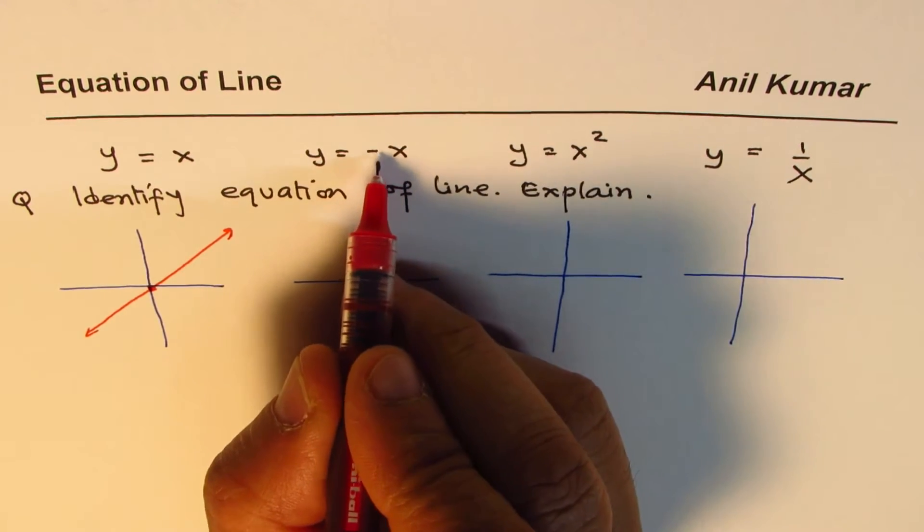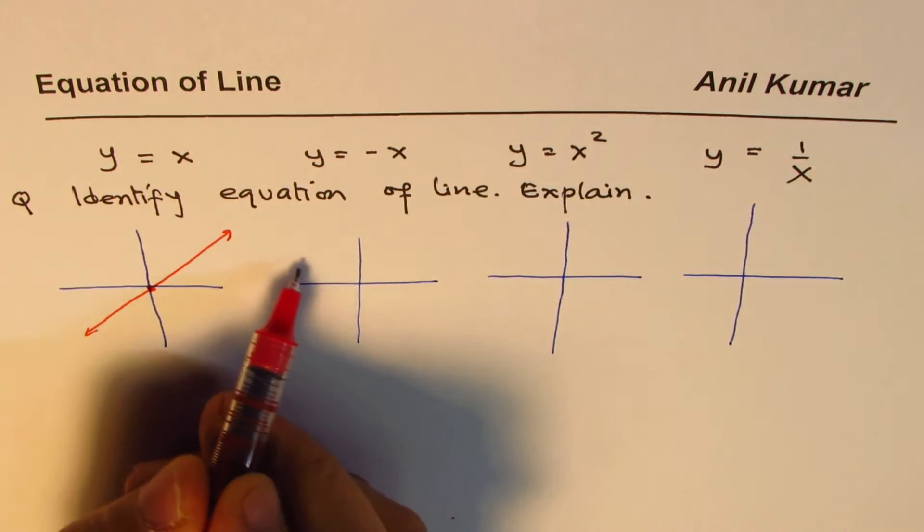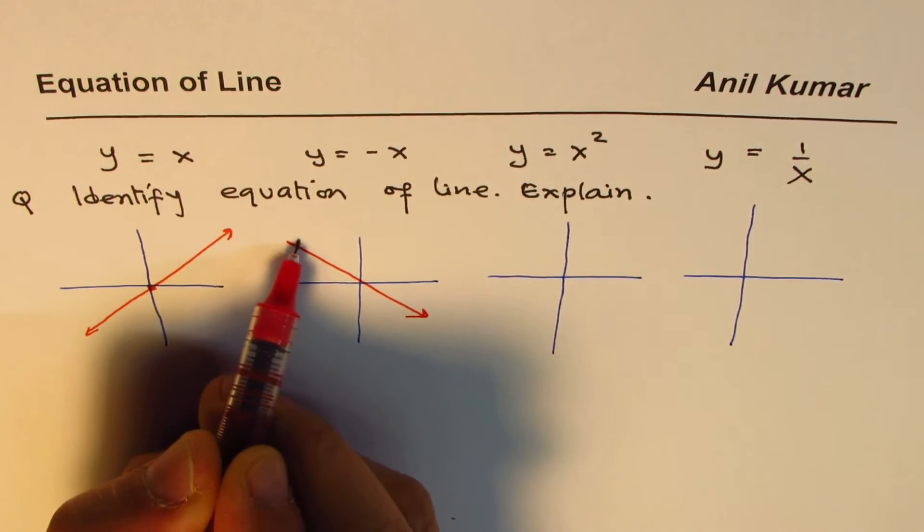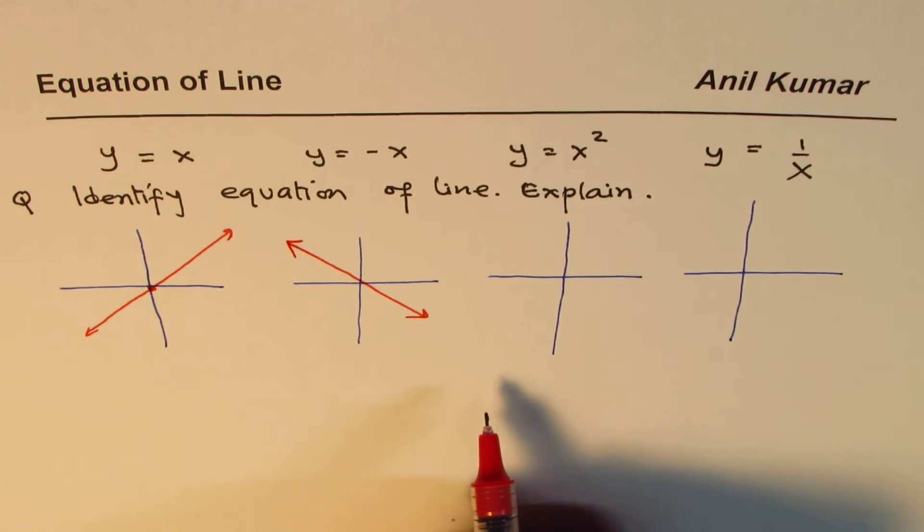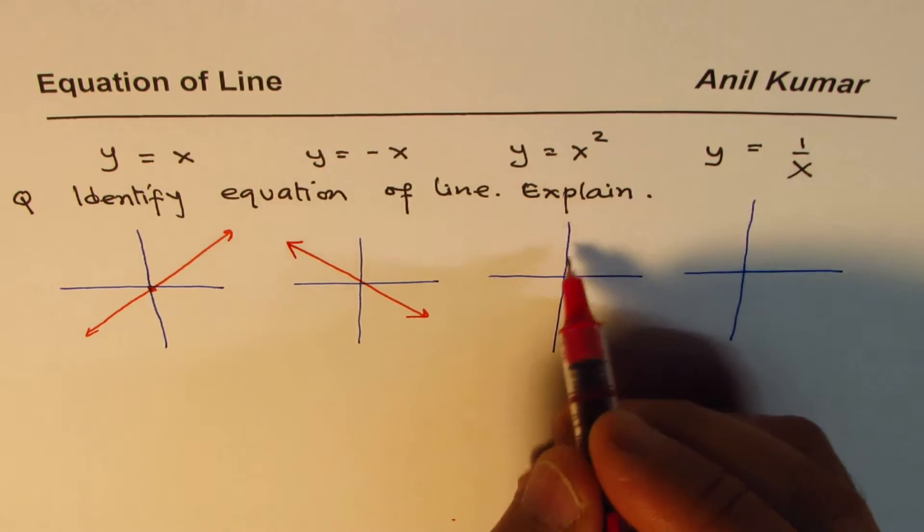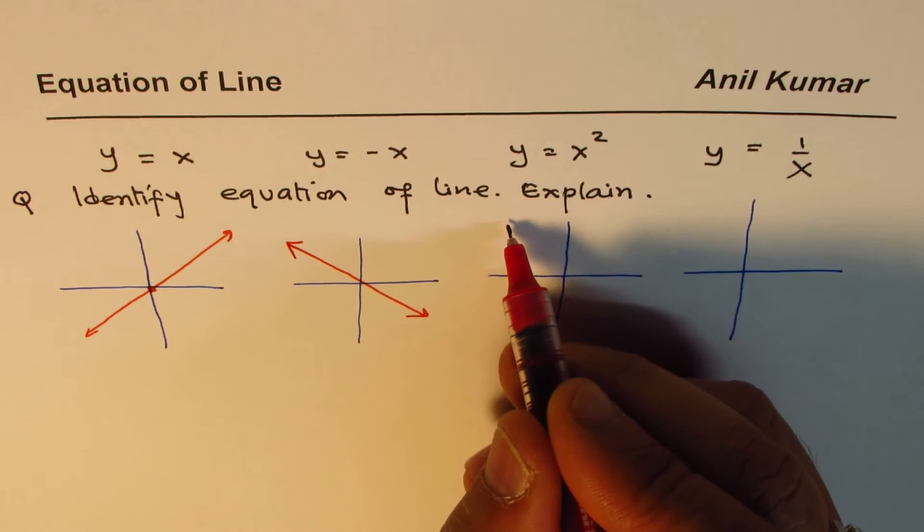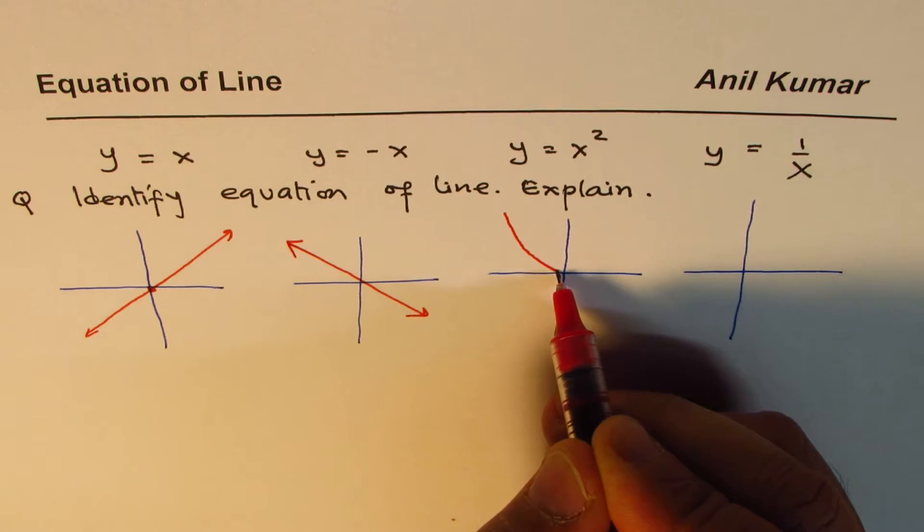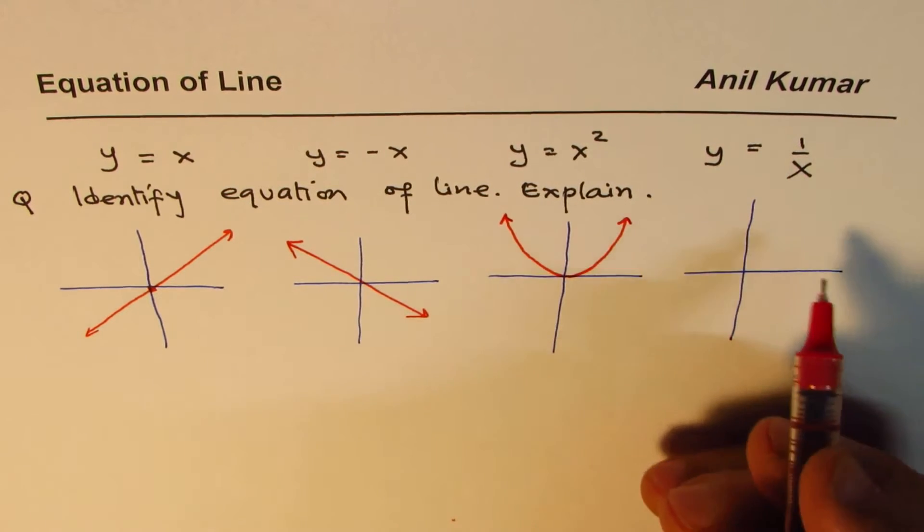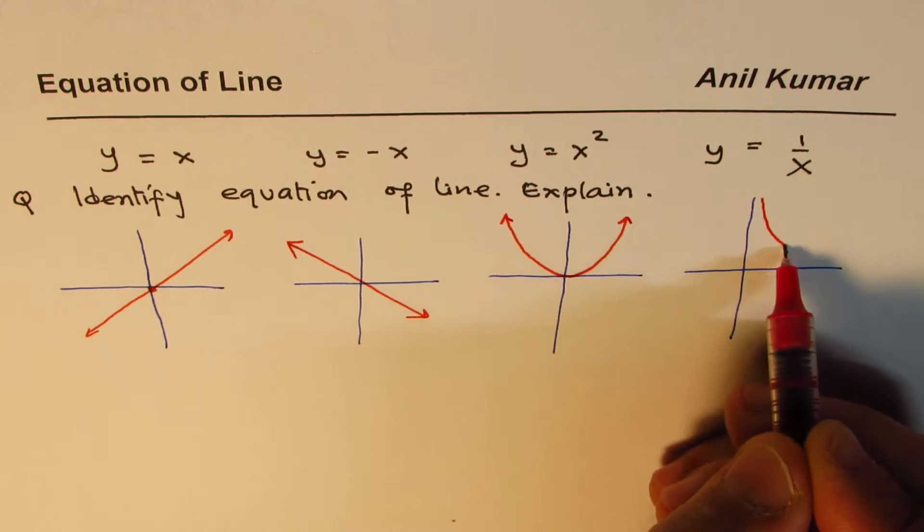Minus X has negative slope, it drops down. As you move from left to right, it will be kind of like this. X squared is like a parabola, so if you graph this one, it will kind of look like this. It's a curved surface, not a straight line. 1 over X will be kind of like this.